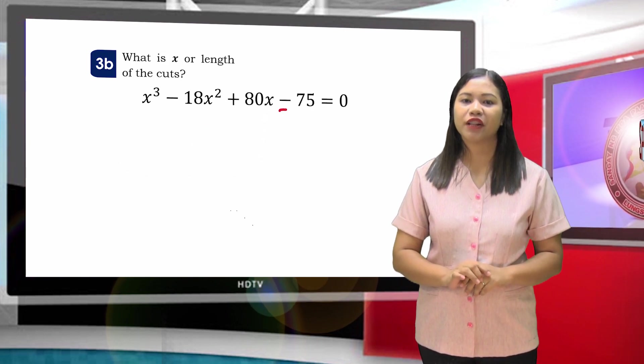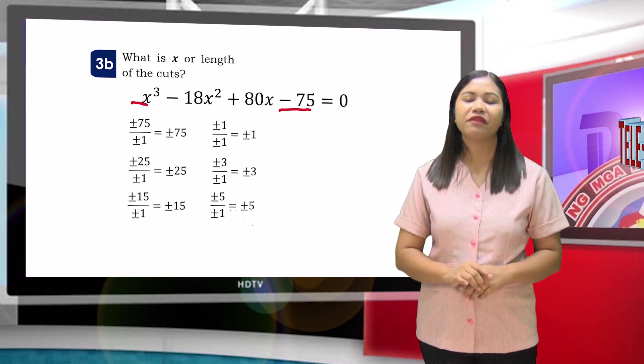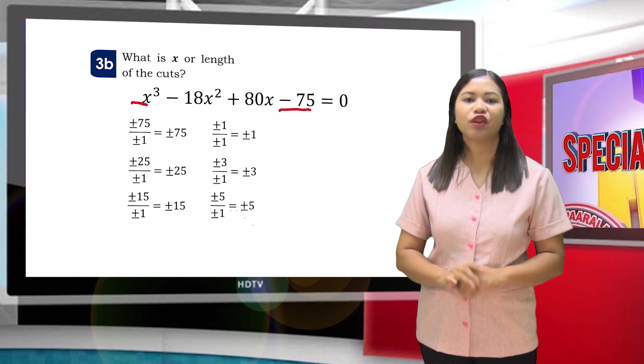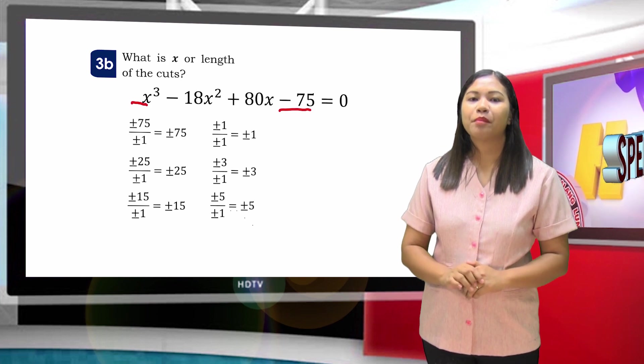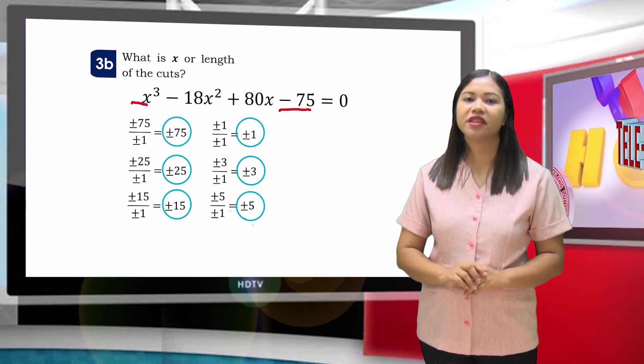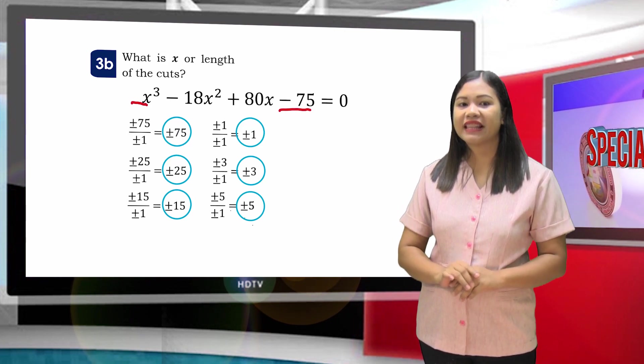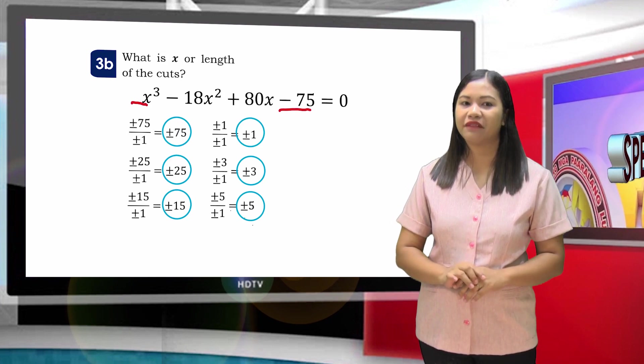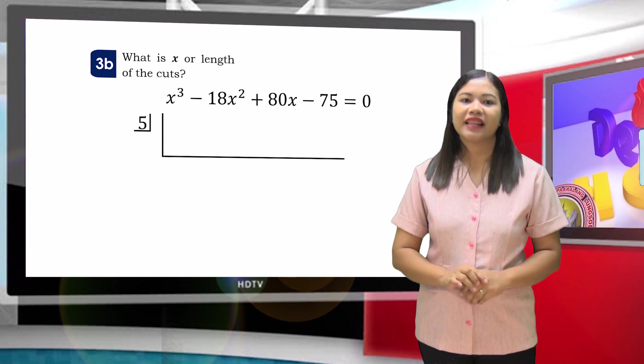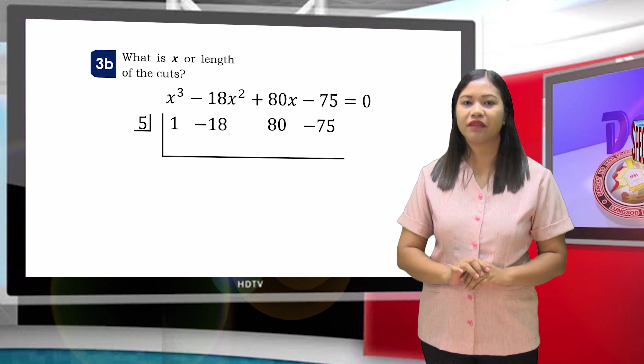Factor the left side of the equation. We may use rational root theorem. Using this theorem, the possible roots can be found by dividing the factors of the constant term and the factors of the leading coefficient. These are positive or negative 75, positive or negative 1, positive or negative 25, positive or negative 3, positive or negative 15, and positive or negative 5. We will try 5 as a divisor in synthetic division. The dividend will be 1, negative 18, 80, negative 75.